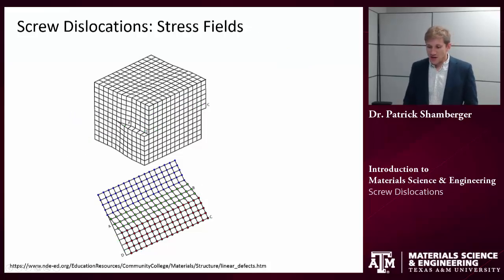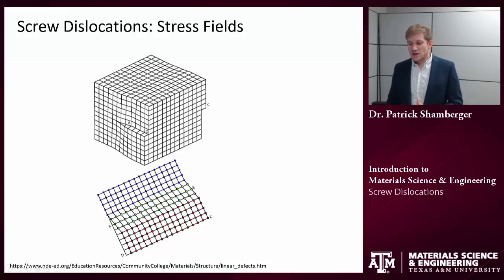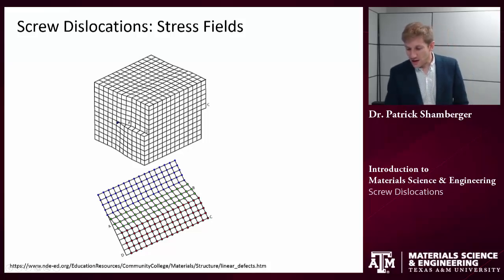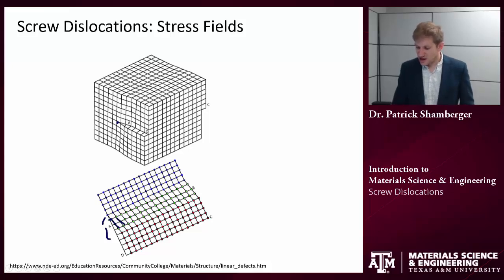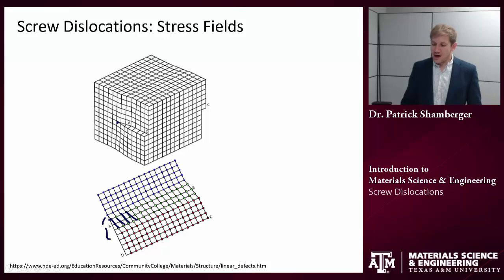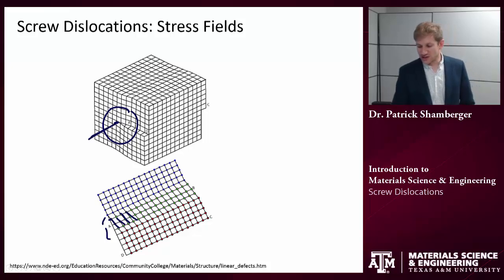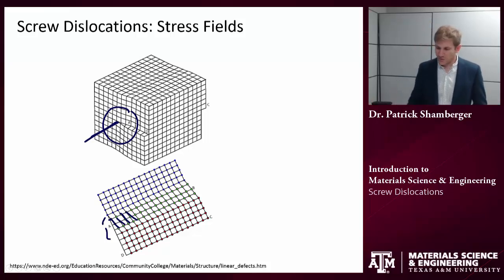Let's talk about stress fields. In screw dislocations, a screw dislocation is a pure shear dislocation. What that means is there are no regions of compression or tension — it's purely shear. We can see this if we look at the projection: we see shear between the top and bottom plane, but in reality that shear decreases radially away from the dislocation itself. The dislocation is a line, and the shear will decrease radially away from that line.